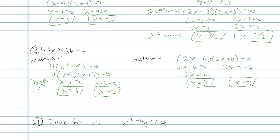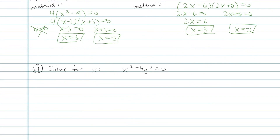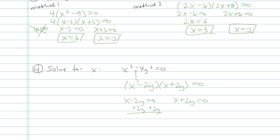The last one we're going to look at has x's and y's, which seems scary, but it's still a difference of perfect squares — difference meaning subtraction sign. I can factor this as x minus 2y times x plus 2y. Since the directions say solve for x, I can't stop at factored form. Solve for x means get x all by itself. For the first factor, x equals 2y. For the second factor, x equals negative 2y.